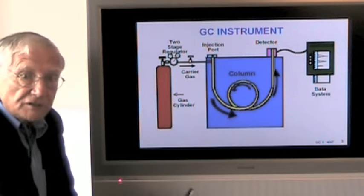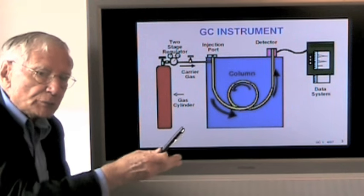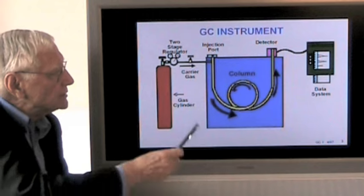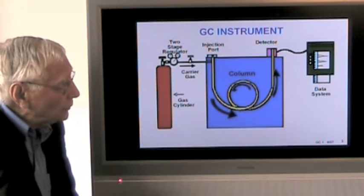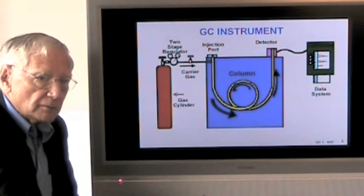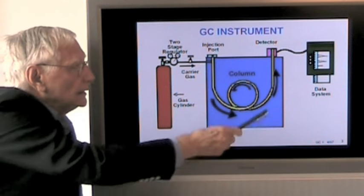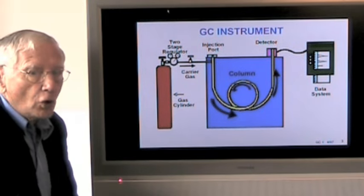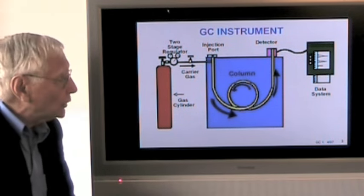This injection port is heated. It is used to rapidly vaporize any sample which happens to be a liquid or solid at room temperature. Once vaporized, the carrier gas carries it into the column where the separation occurs. After the column, the sample components enter a detector where an electrical signal is generated. That signal is proportional to the concentration of the sample. And that signal is recorded here on the data system. In today's world, this is almost always a computer. Earlier times, we've used integrators, and much earlier times, even a very simple recorder.